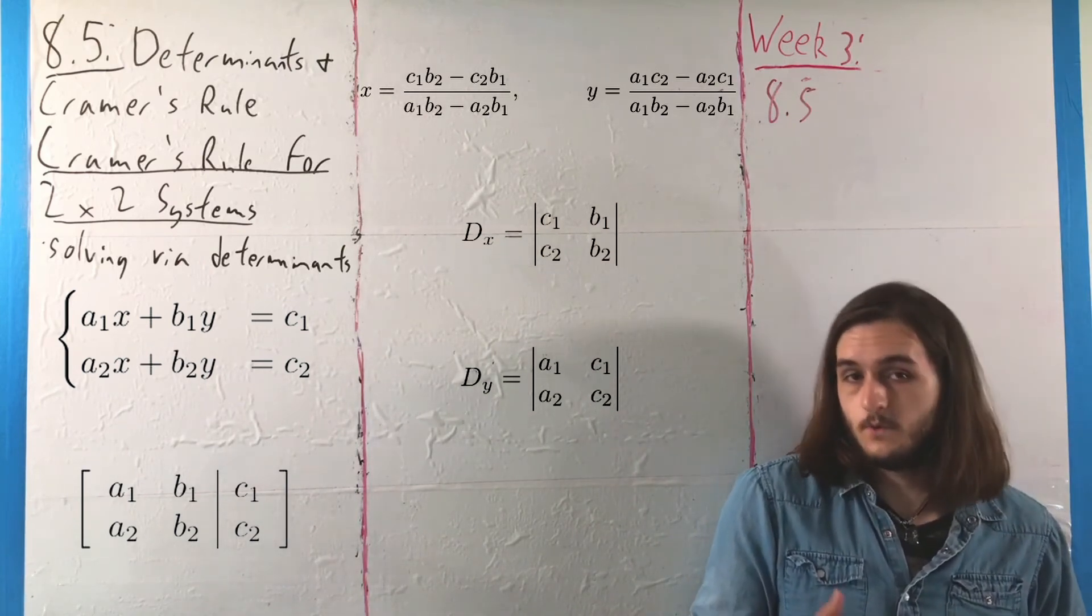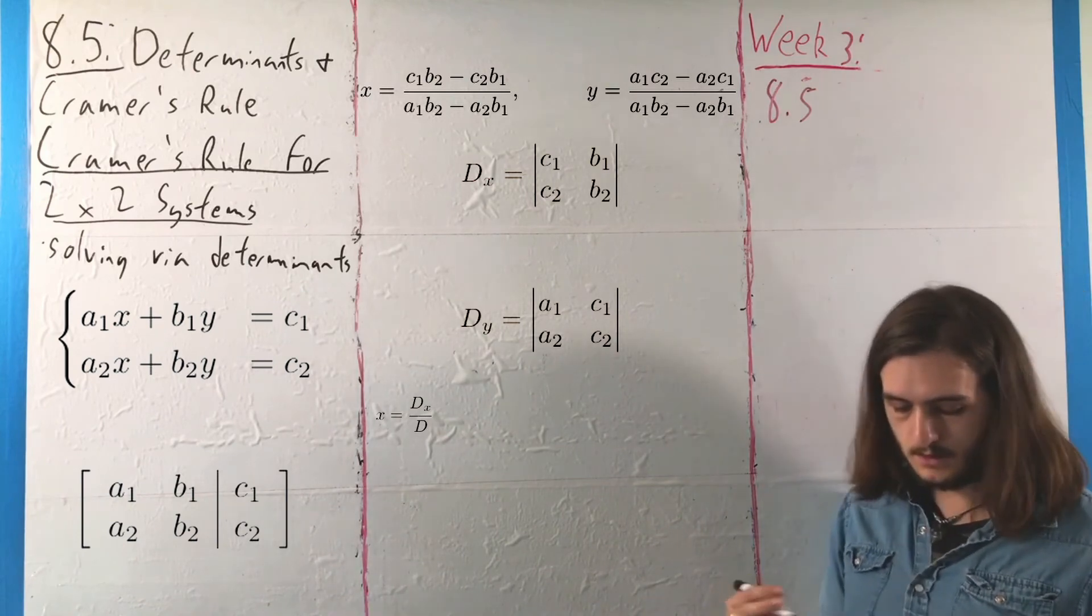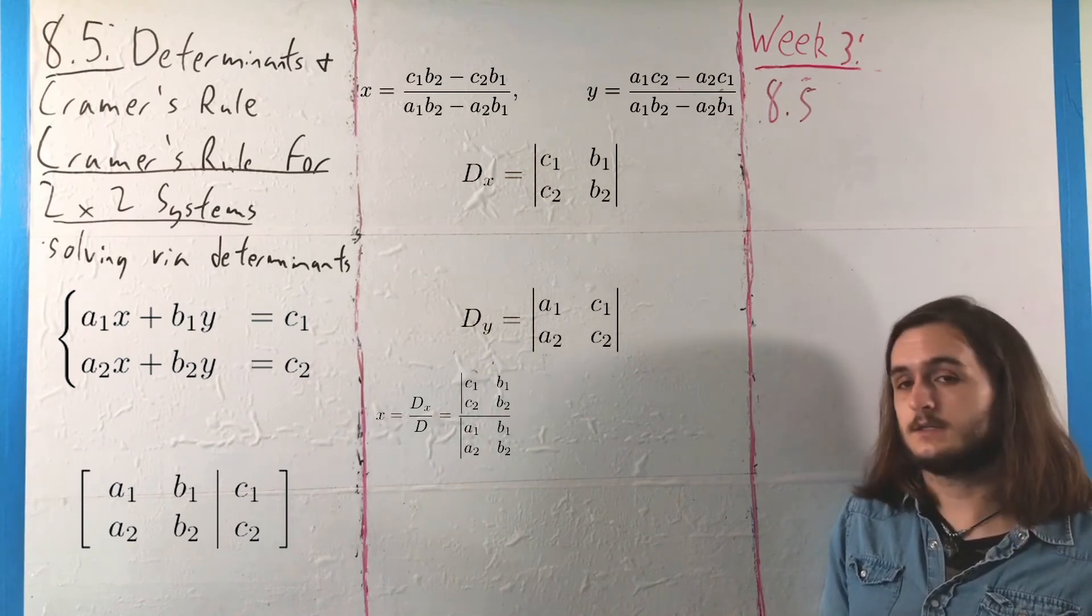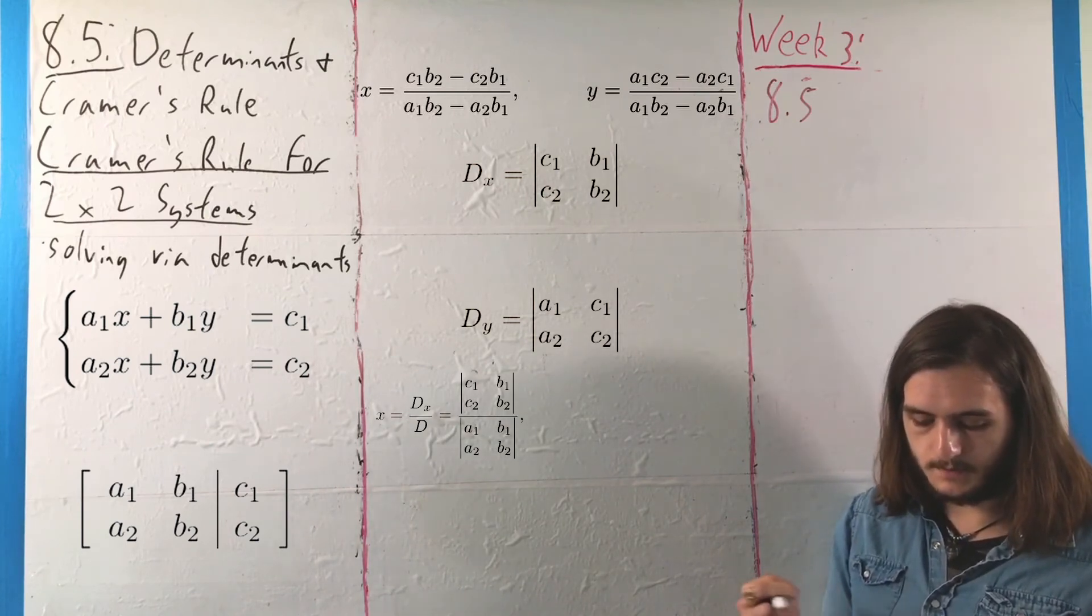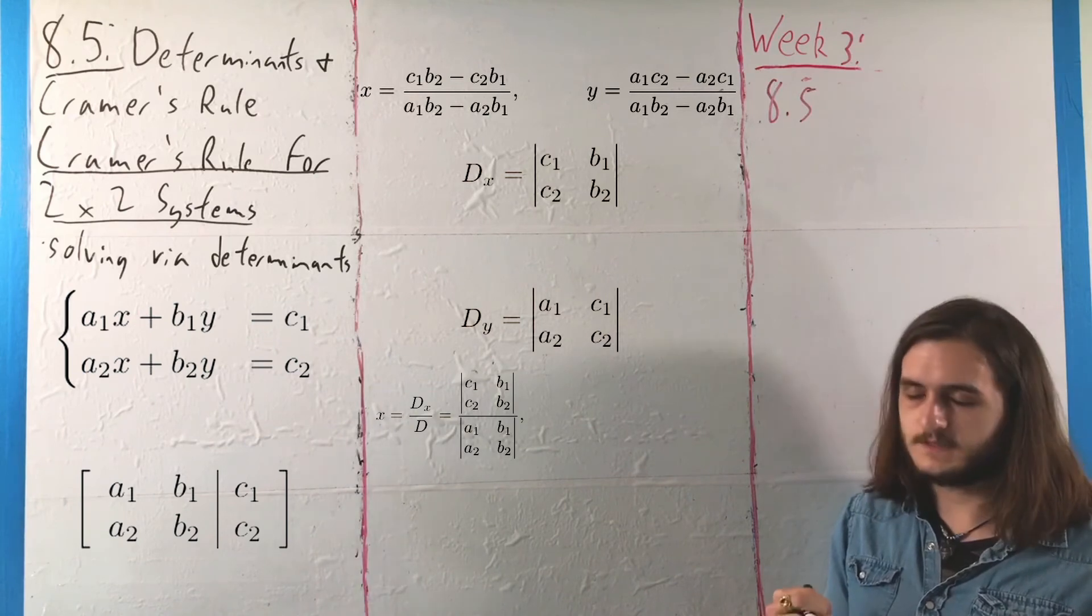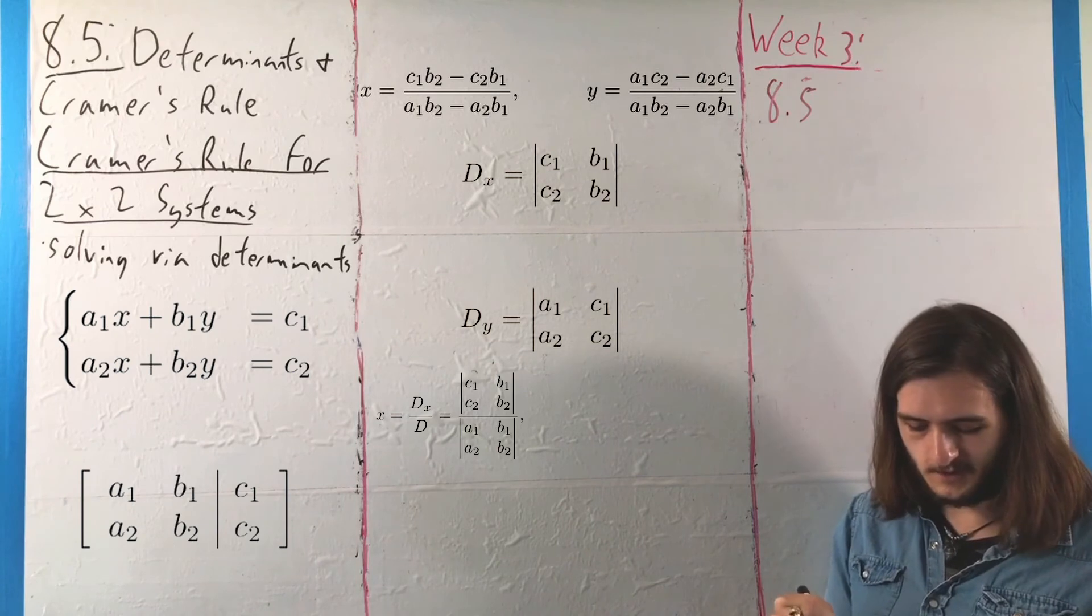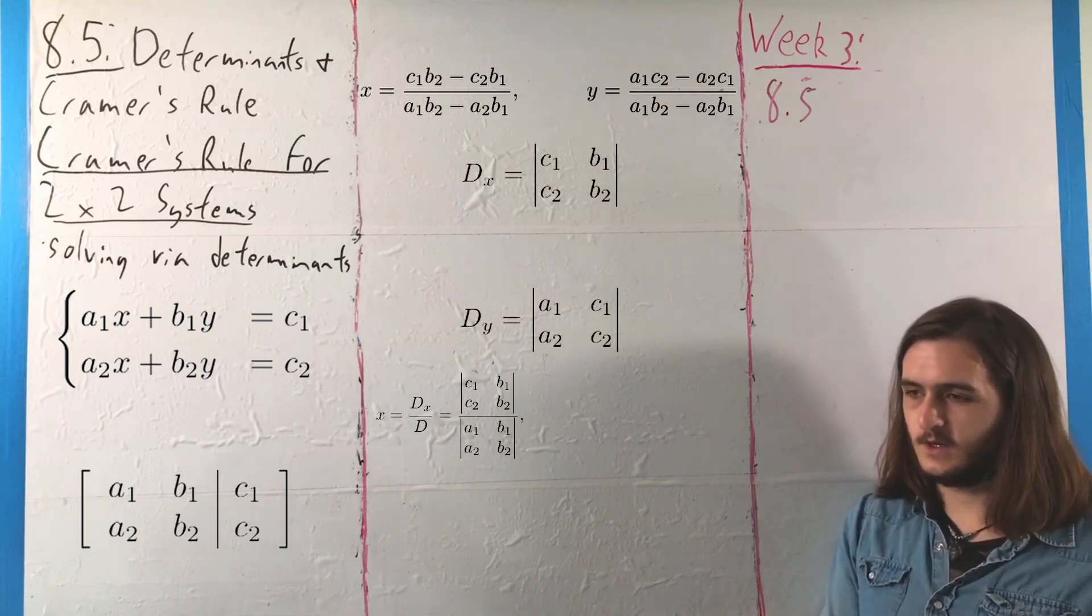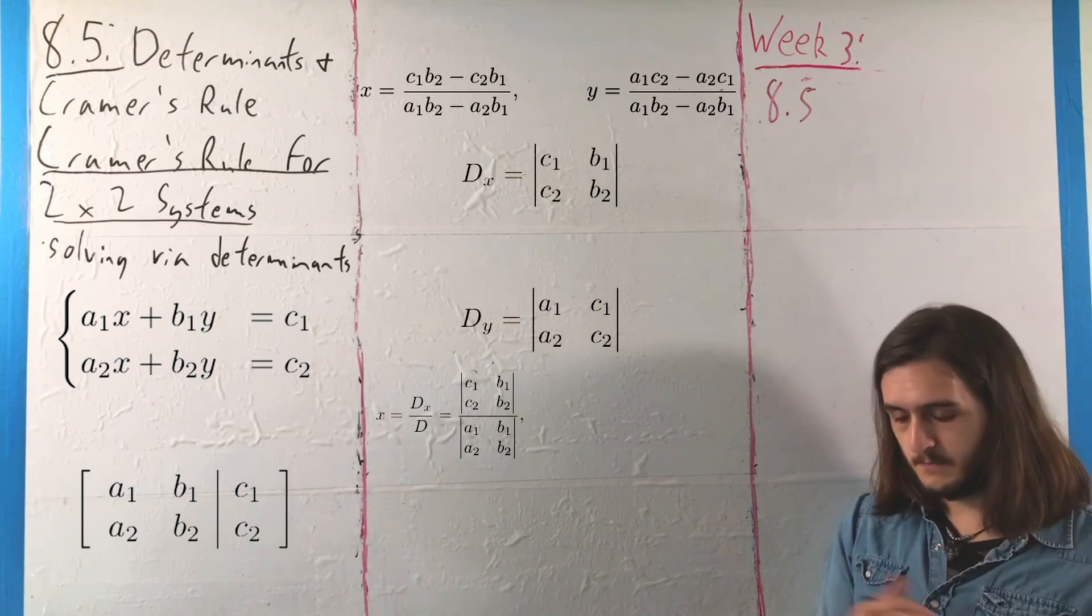And as a result, if you want to solve a system, you can write the pieces X and Y in terms of ratios of determinants. That is, X is DX over D, the determinant of C1B1 over C2B2, or C1B1, C2B2 over A1B1, A2B2. And there are a lot of things going over things here, it's easy to be incautious with that and make it a little more confusing than it needs to be.